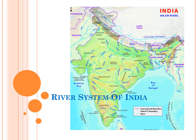Hello friends, let us discuss about the Indian river system. Rivers of India are considered the basic needs of Indian people as they depend heavily on the rivers. India's river system supports a huge number of people's livelihoods by offering irrigation, potable water, affordable transportation and energy.